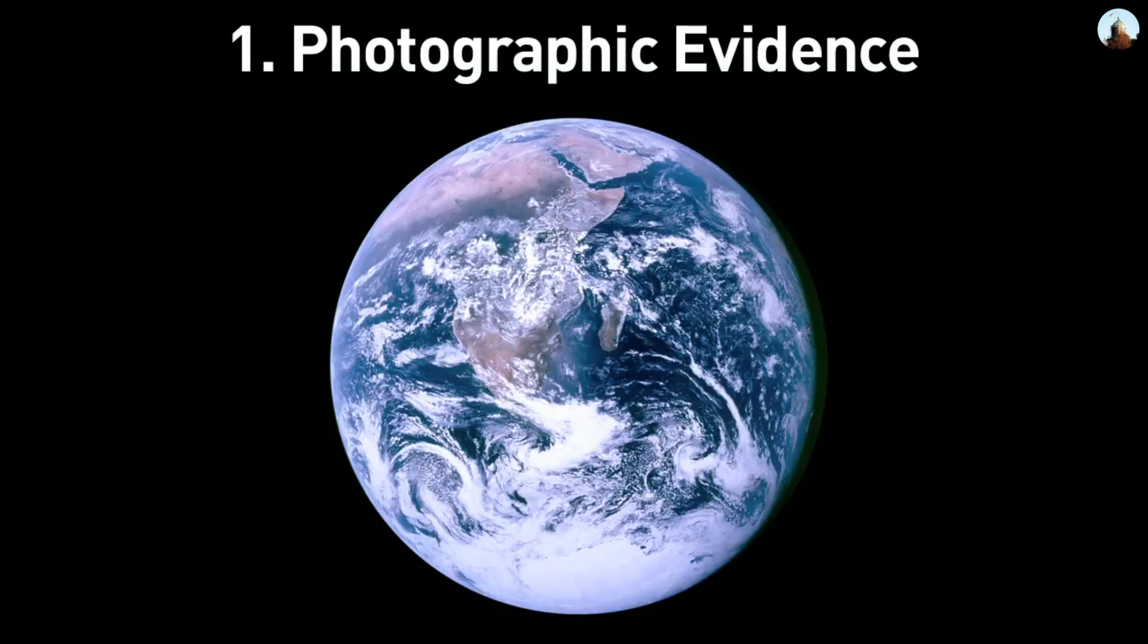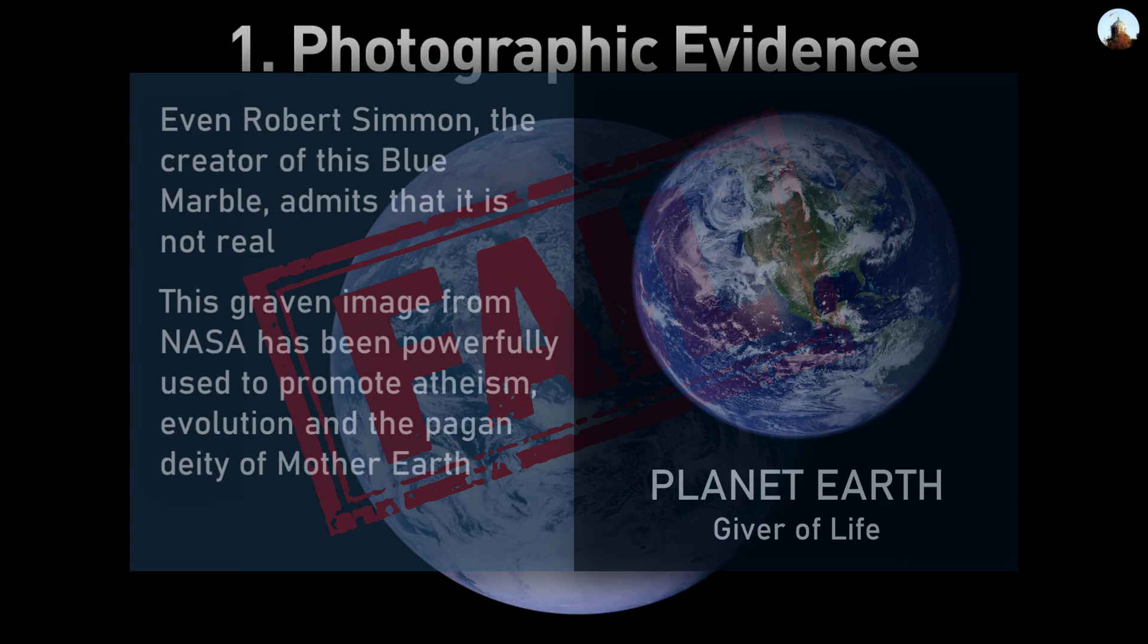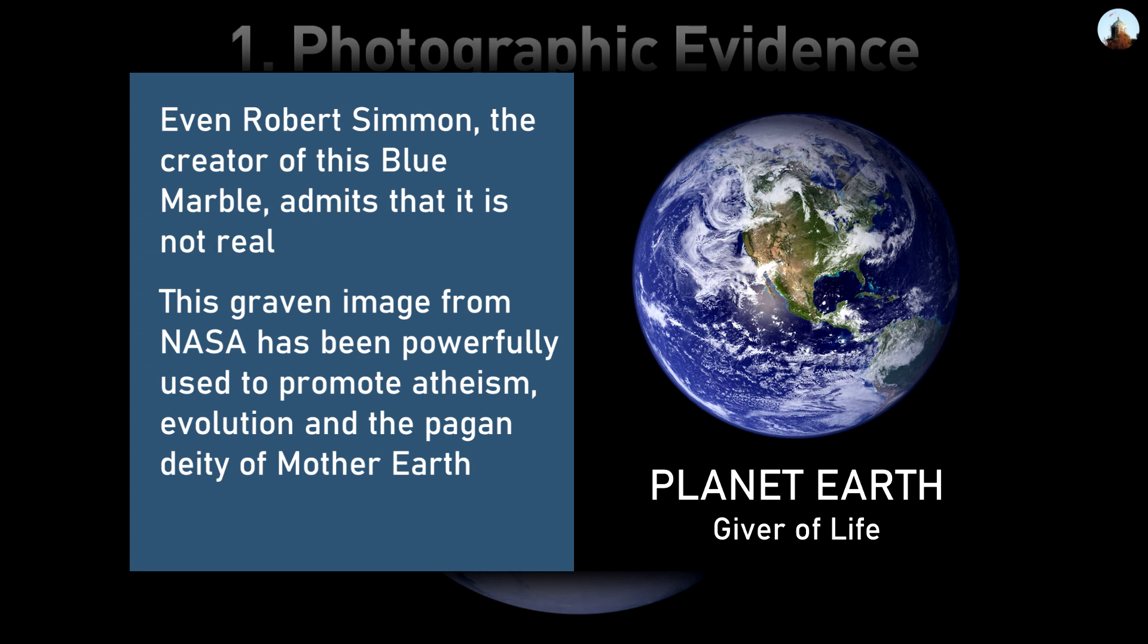Photographic evidence. And number 1. We know the Earth is round because we have photographic evidence. So some of those are painted on. It is photoshopped, but it has to be.